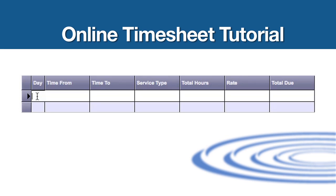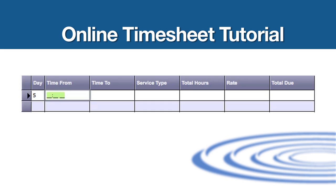Type 5 in the first box under Day, then click the Tab key on your keyboard. Type 1100A in the next box under Time From, then click the Tab key. Type 0100P in the next box under Time To, then hit Tab on your keyboard.